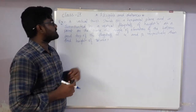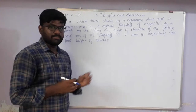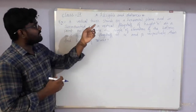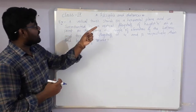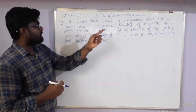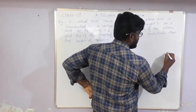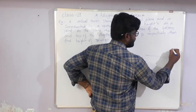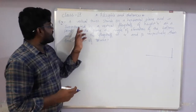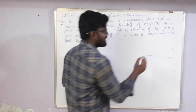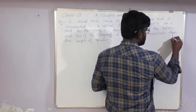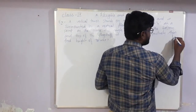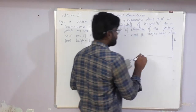Warm wishes to one and all. We are entering the third session of Heights and Distance. Here is one example: a vertical tower stands on a horizontal plane and is surmounted by a vertical flagstaff of height h. So here this is a vertical tower on a horizontal plane, and the flagstaff is on top of the tower with height h meters.